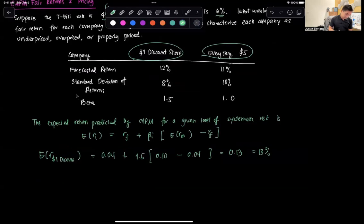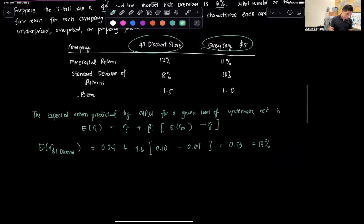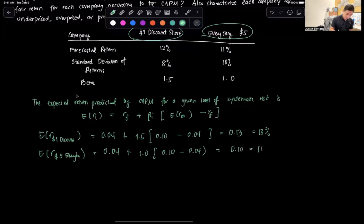Also, by the way, how did we find this risk premium? Well, we just add the two and we get 10%. And then this expected value R of the Everything $5, we have a risk-free rate of 0.04 times the beta is 1 times 0.10 minus 0.04. This is equal to 0.10 or 10%.